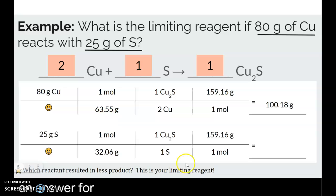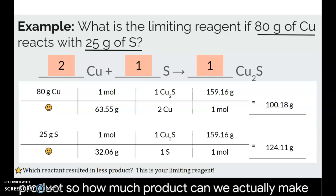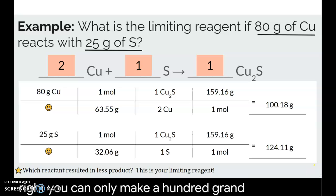Who got an answer for that next one? Max? Uh, 124.3.4. Yep. So we have enough copper to make 100 grams of our product, but we only have enough sulfur to make 124 grams of our product. So how much product can we actually make? Right. You can only make 100 grams.